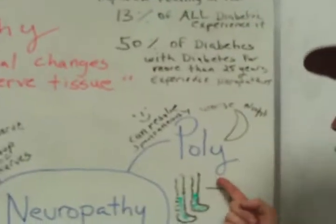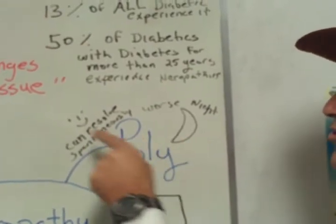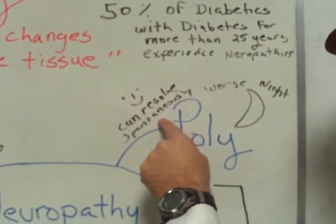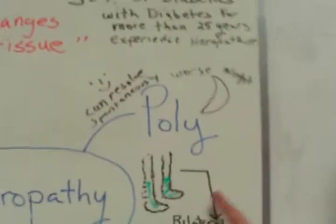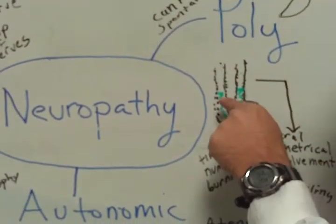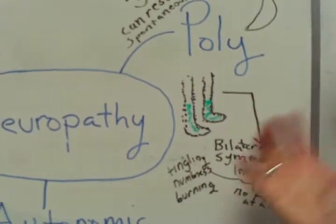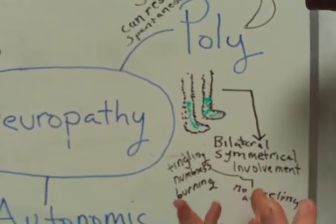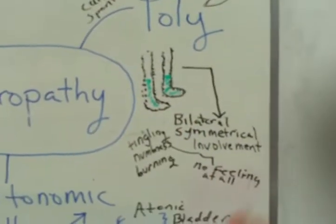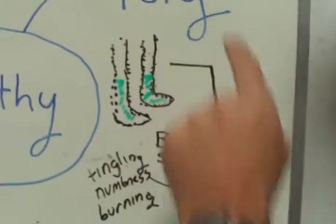Now let's go to polyneuropathy. We know poly means many. Polyneuropathy is worse at night, but can resolve spontaneously. Looking at this illustration, polyneuropathy involves bilateral, symmetrical involvement — both legs are affected. What does the patient experience? Tingling, numbness, burning — or just the opposite: absolutely no feeling at all.